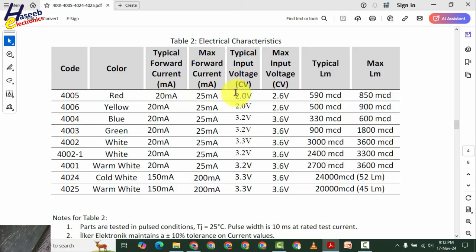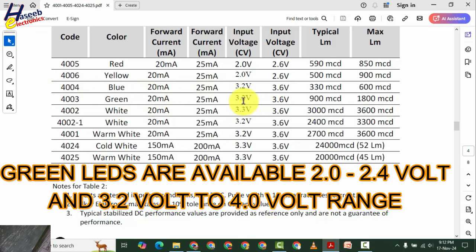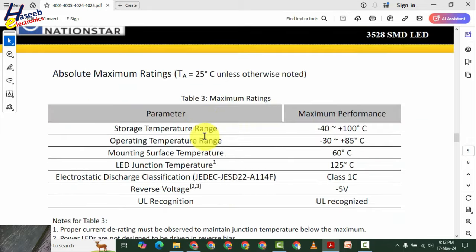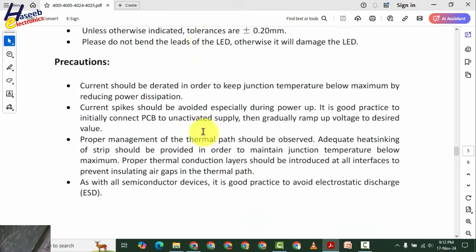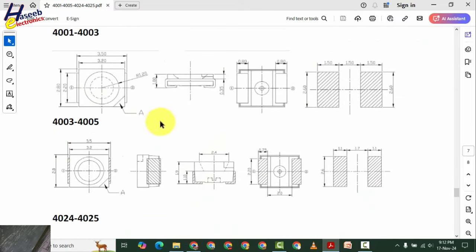Then yellow LED, 2V to 2.6V. Blue LED, 3.2V to 3.6V. In this pattern, the green LED is 3.2 to 3.5V. But in our case, green LED is 1.9V.